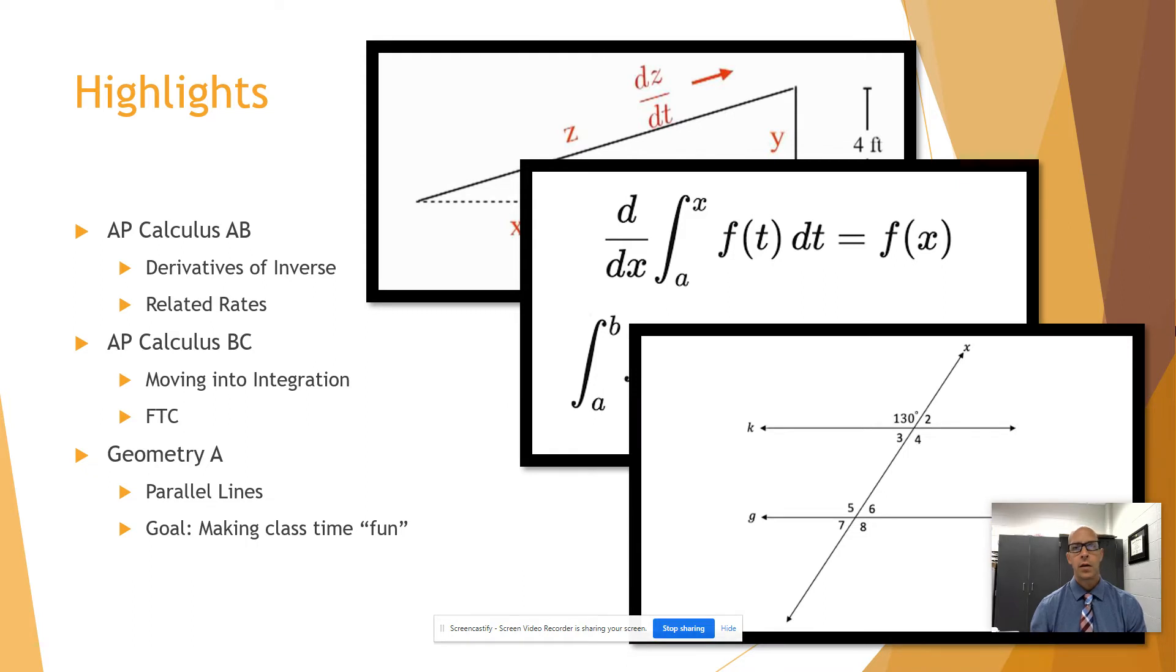And finally, here in geometry, we're looking at parallel lines. For example, in this image here, given that lines K and G are parallel, there are certain relationships that are true about the angles. For example, since the angle up there is 130, angle 5, which is the corresponding angle to that one, would also be 130 degrees.